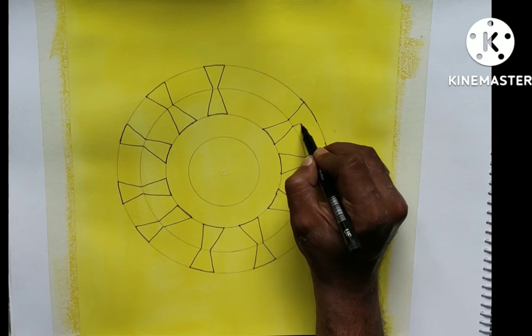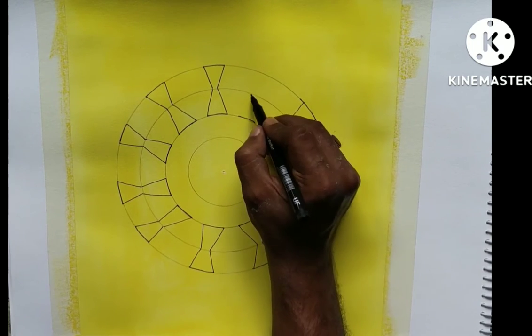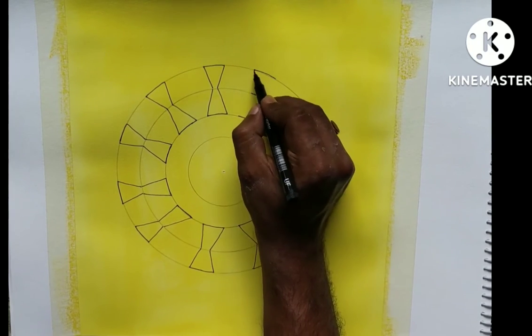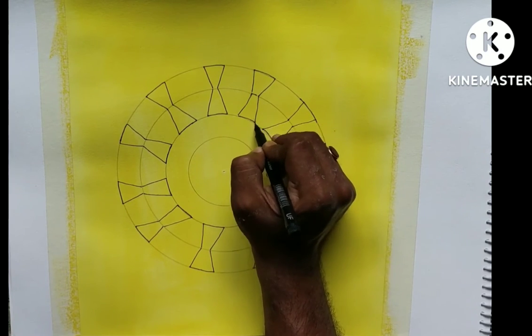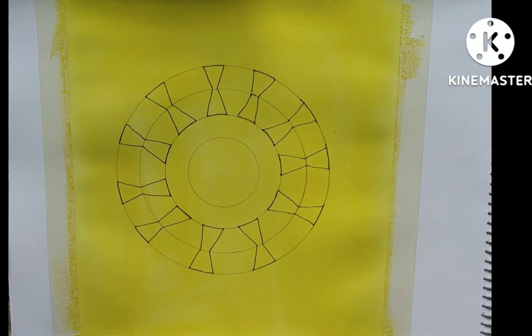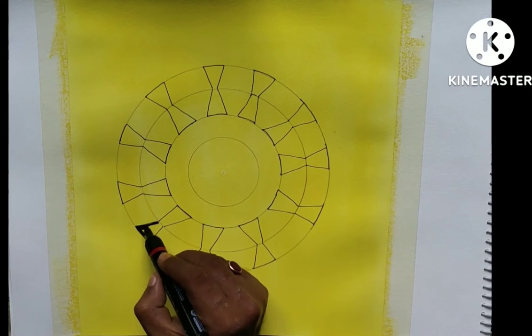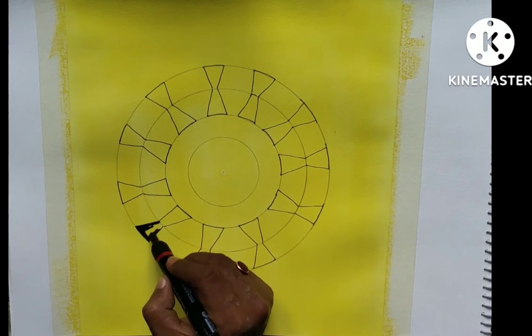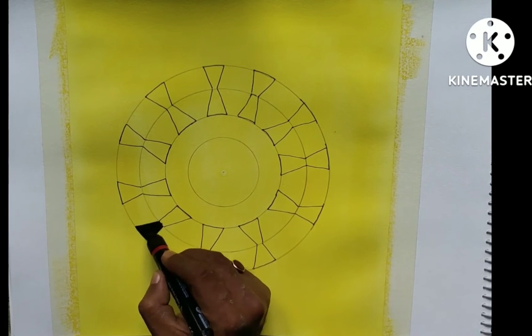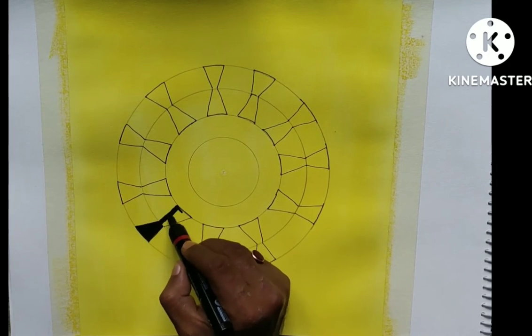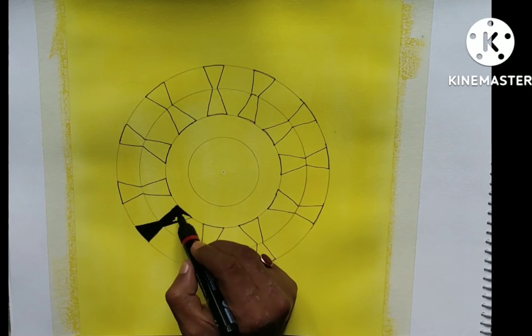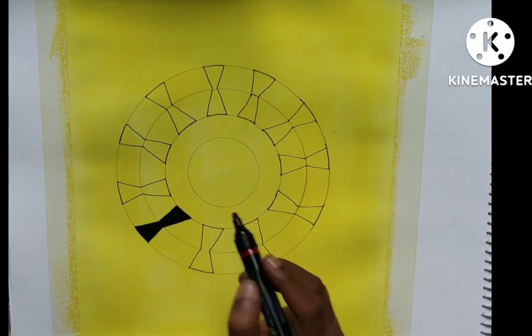Warli paintings were mainly done by the women folk. The most important aspect of the painting is that it does not depict mythological characters or images of deities, but depicts social life, pictures of human beings and animals.